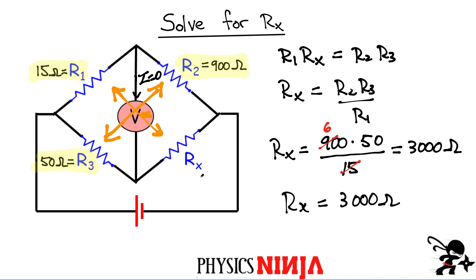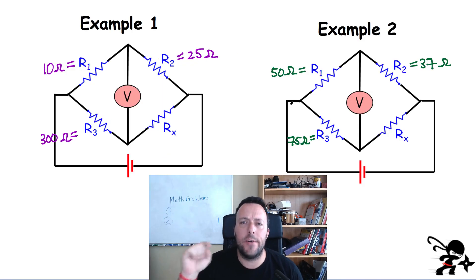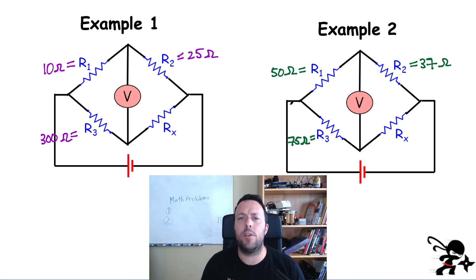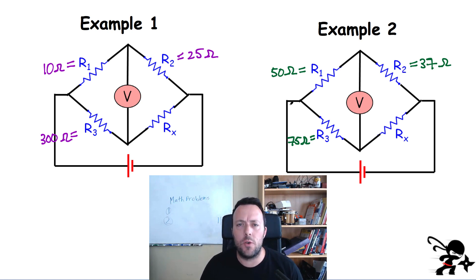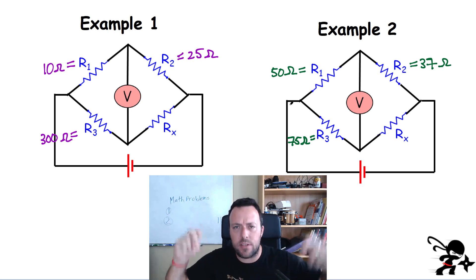If Rx is any other value, you will measure a deflection and there will be a current flowing through the center branch. Only for this specific value of resistance will you get zero deflection. It's now time for you to practice the Wheatstone bridge. Here are two simple examples — I've given you values of the three known resistances. Find the value of the unknown resistance for each example and leave your answers in the comment section.